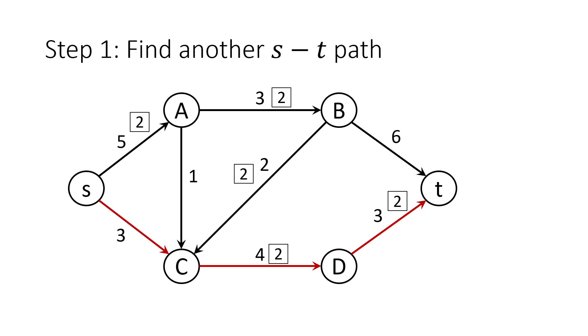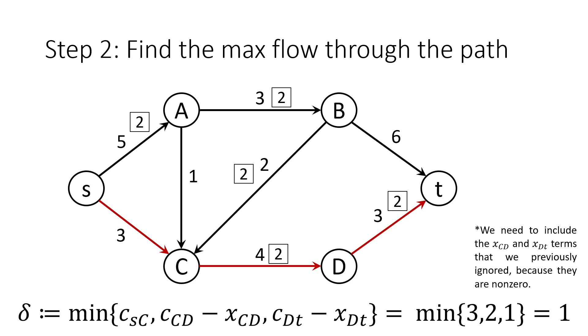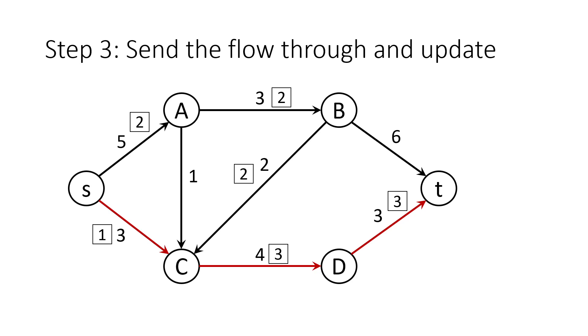Here's another ST path. We didn't encounter this issue earlier, but since it seems kind of obvious, we should make sure to subtract the amounts of flow that are already going through the edges from the capacities when calculating our minimum amount of flow. Here, we're taking the minimum of 3, 4-2, and 3-2, which is 1. Now, we send the flow through and update.